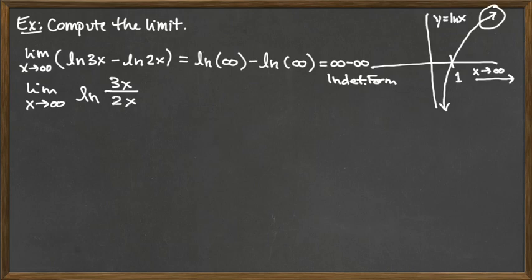So the really nice thing here is that since we have taken a difference and put it into a quotient, we can now do the cancellation there with the x's. And so what we're looking at then is the limit as x goes to infinity of the natural log of 3 halves.